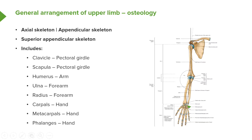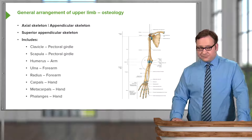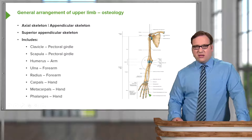Here we can see a cluster of eight carpal bones, which constitute the wrist joint. They articulate with a series of long bones known as the metacarpals. The metacarpals allow for articulation with small bones called phalanges, which form the joints of the fingers. In fingers two, three, four, and five we have three phalanges, and in digit one — the thumb — we have two. This allows us to manipulate objects and move our fingers into various different positions.